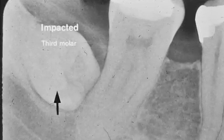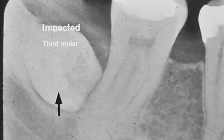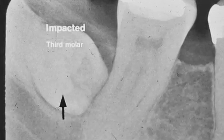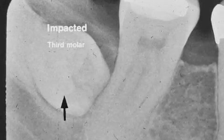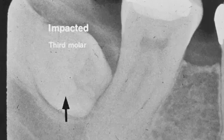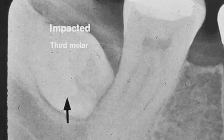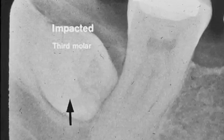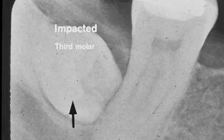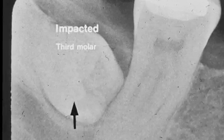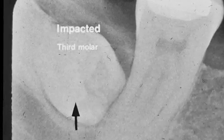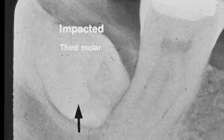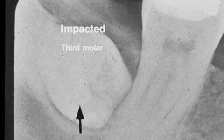Tooth number 32 is an impacted third molar. Will it ever erupt properly? No. It is also known as ectopic eruption — erupting out of position. What are some problems that could occur with this tooth position?